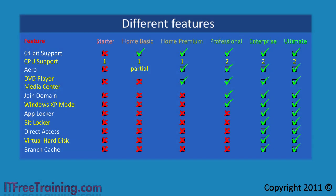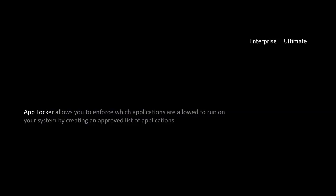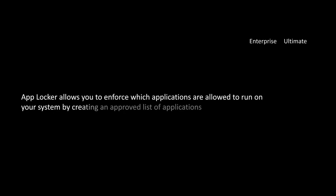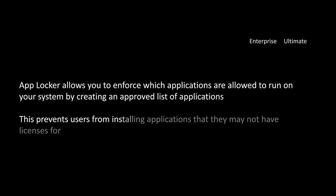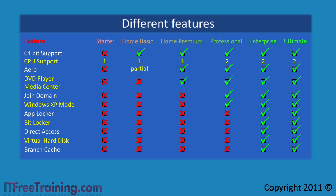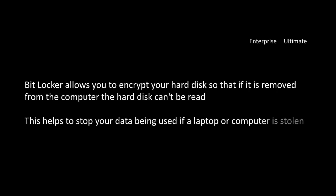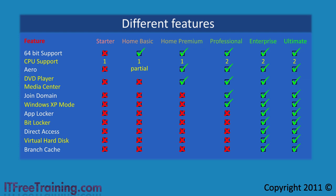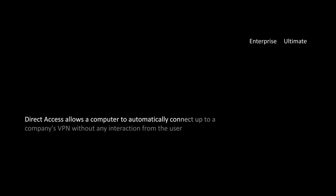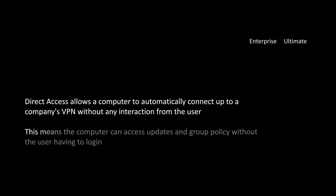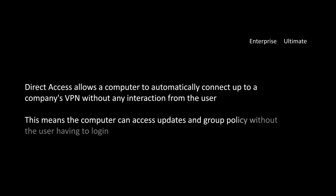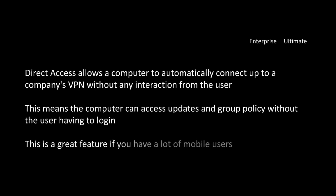The last two editions are Enterprise and Ultimate. Feature-wise, these editions are identical. They include support for App Locker, which allows you to control what runs on your system by creating an approved list of applications, preventing users from installing unlicensed software. BitLocker allows you to encrypt your hard disk so that if it is removed from the computer, it cannot be read, protecting your data if a laptop or computer is stolen. Since these editions are aimed at business, support for Direct Access is also included, which allows a computer to automatically connect to a company's VPN without any interaction from the user, meaning the computer can access updates and group policy without the user having to log in. This is a great feature for mobile users.